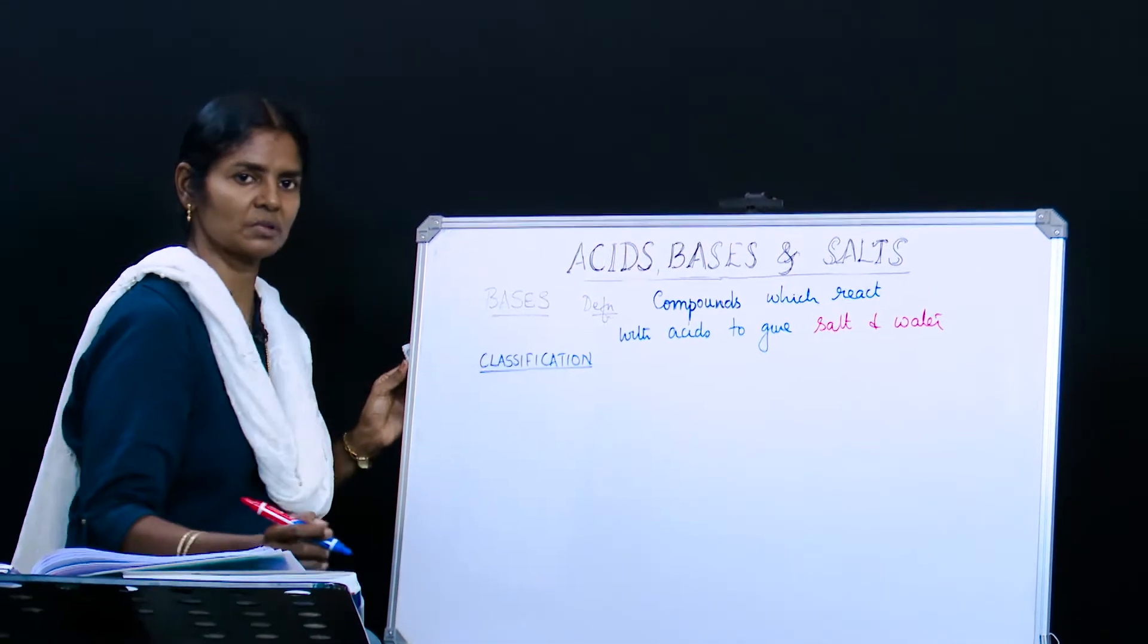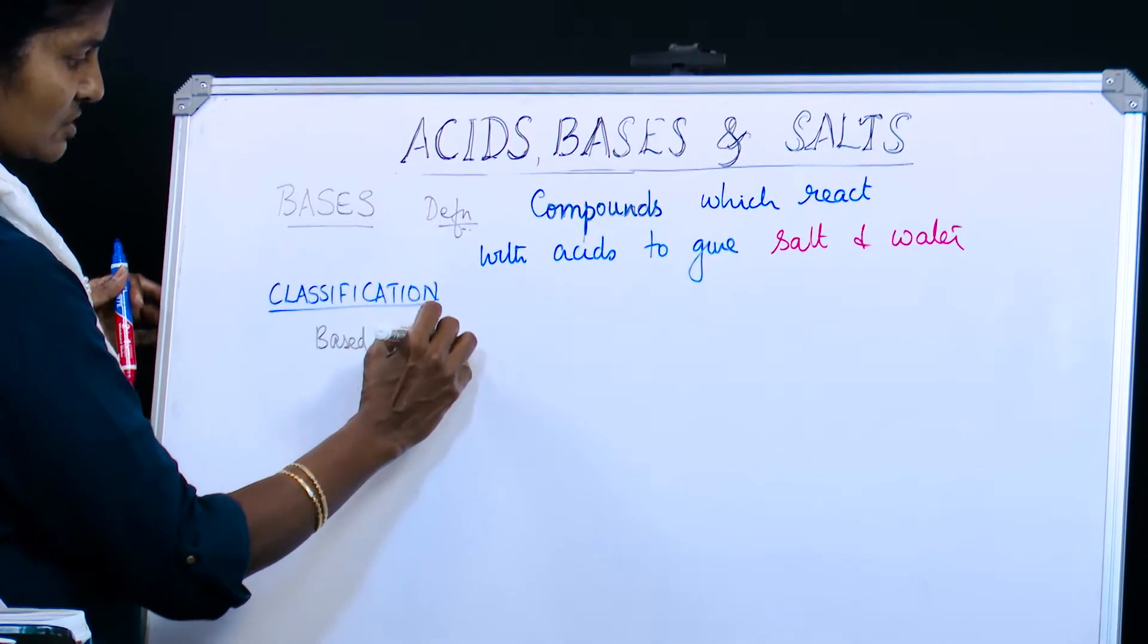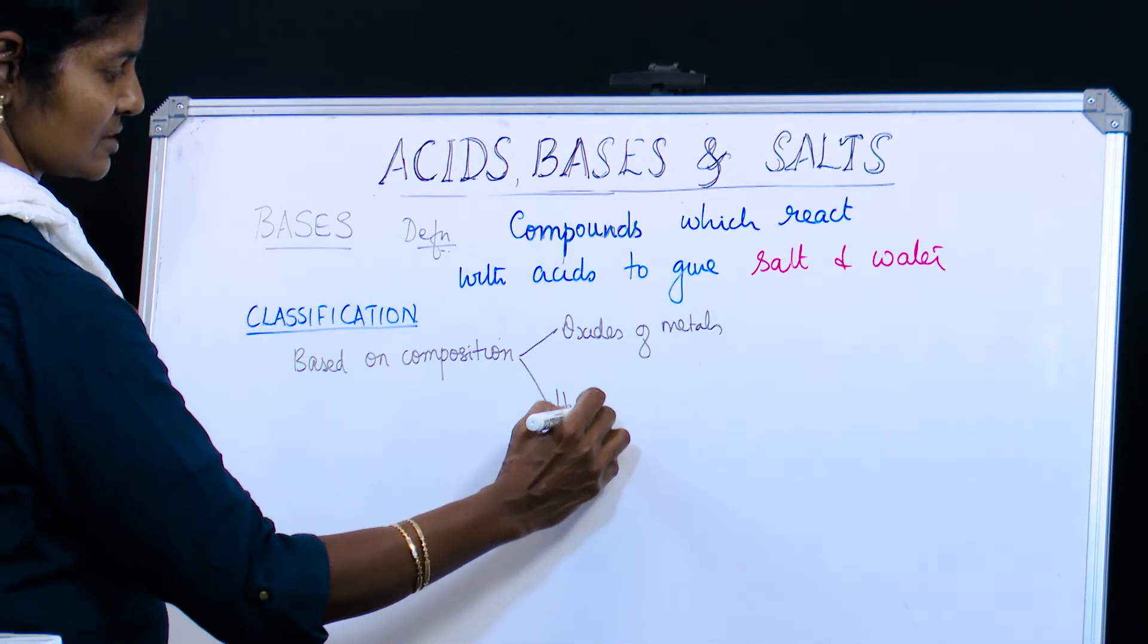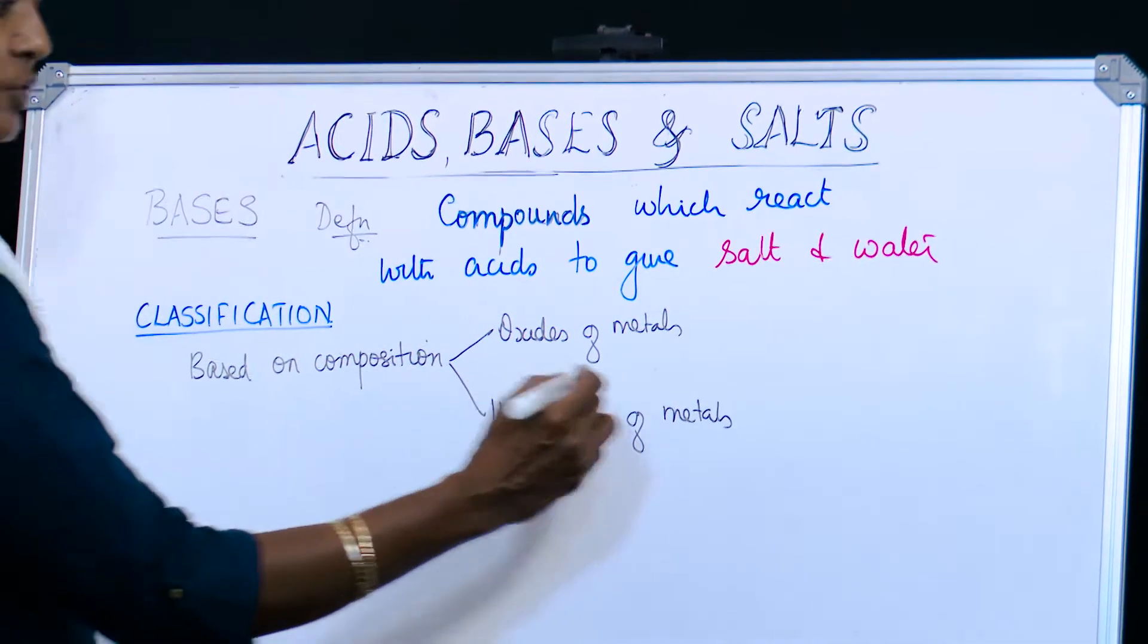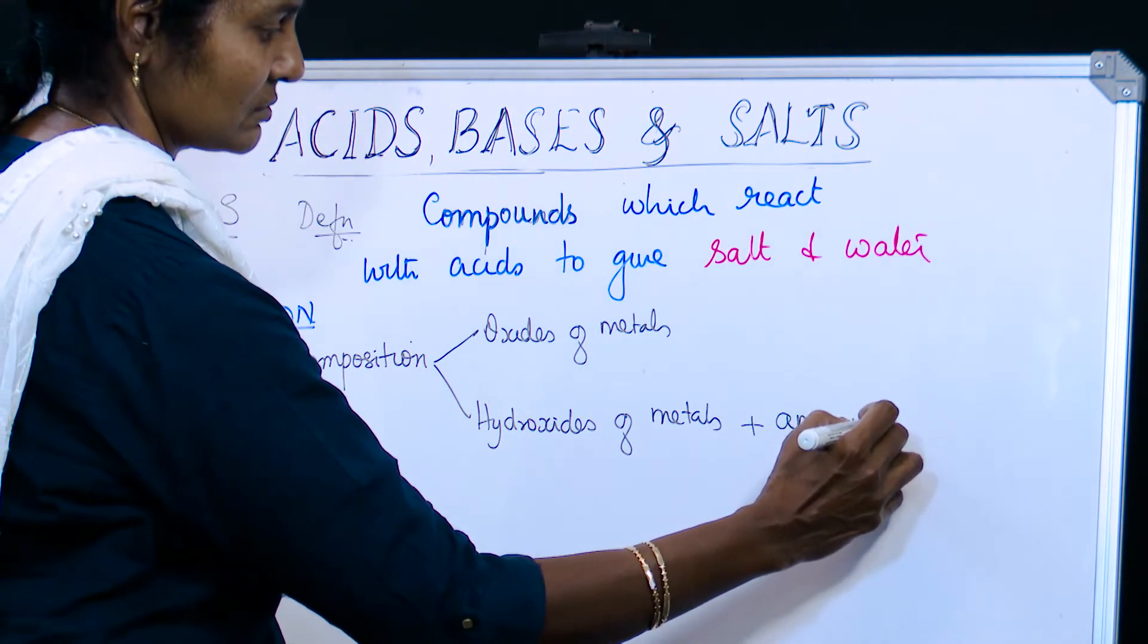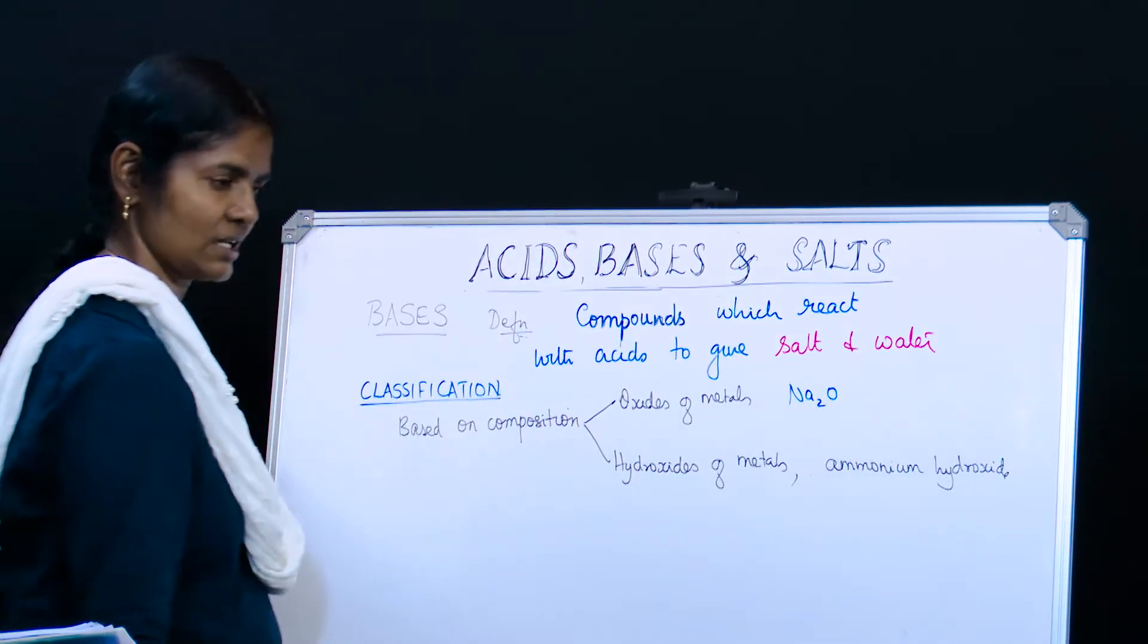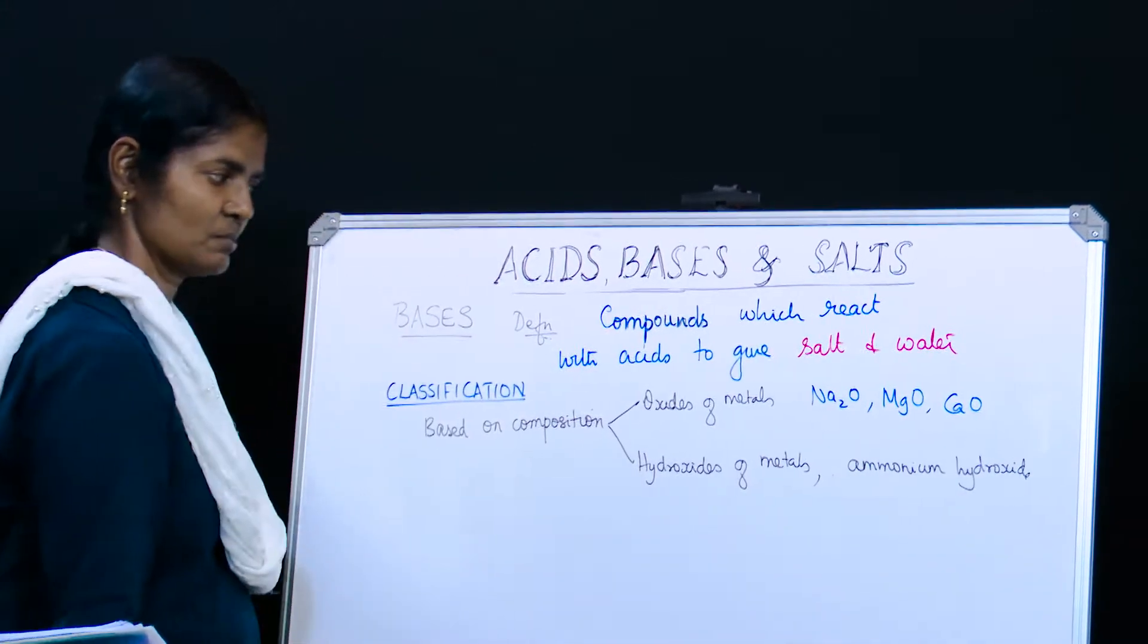So we move on to the classification of bases. Some examples - when we think of composition, they are oxides of metals and hydroxides of metals. Both are bases. And when you come to the hydroxides of metals, you could also add one more hydroxide which is not a metal but it's a weak base - that is ammonium hydroxide.